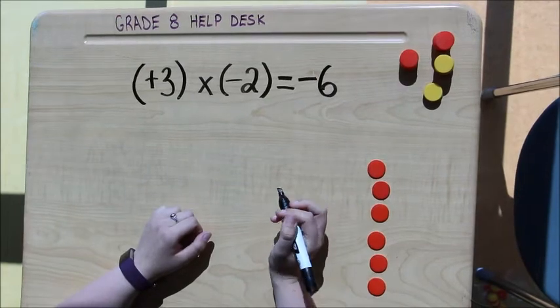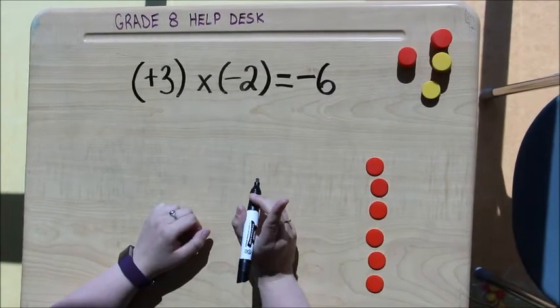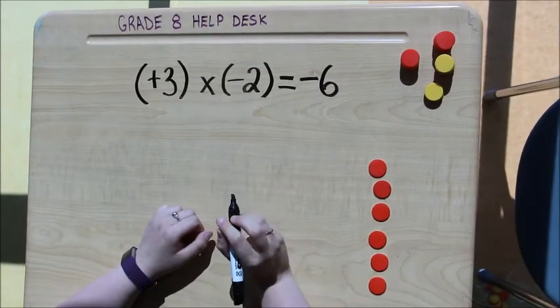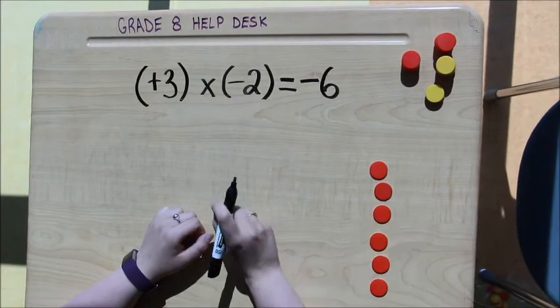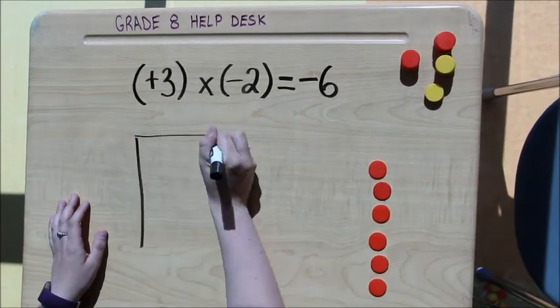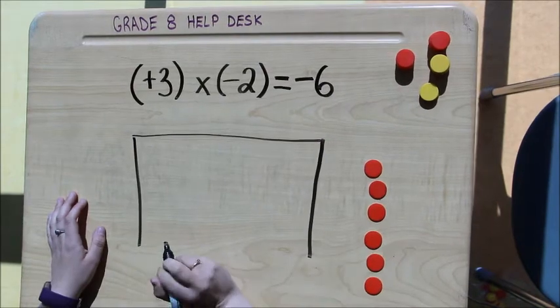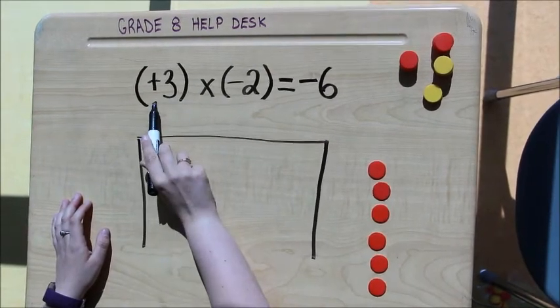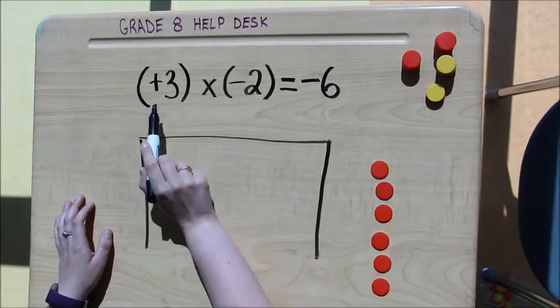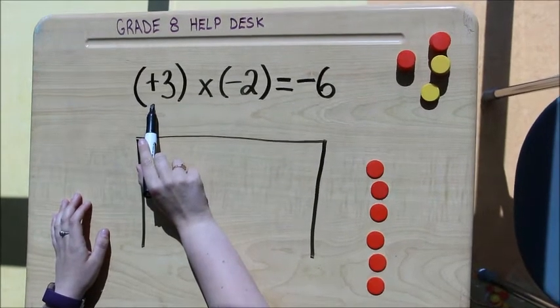So I've done the math but I want to make sure my answer is correct. The way I can do that is using my tiles over here. So I'm going to start off by making a bank and this positive sign tells me I'm going to be putting something into the bank.